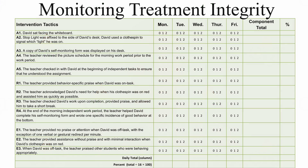Next, treatment integrity procedures are planned, such as monitoring the implementation of the intervention using a component checklist, which is then monitored by the teacher or implementer as well as by an outside observer. This information tells us the extent to which each intervention tactic was implemented as planned across ARA components. We cannot draw accurate conclusions about student performance unless treatment integrity data are also collected. It cannot simply be assumed that all the intervention components are in place.